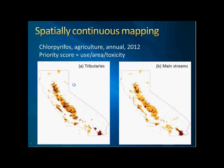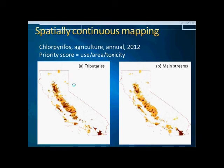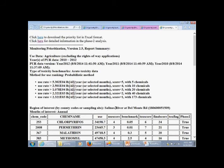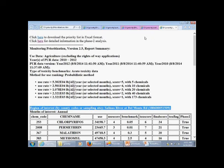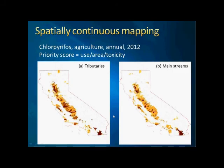Let's go ahead to the next one — the spatially continuous mapping. The idea is that for most of our prioritization, we are talking about one monitoring site, checking relative priority for multiple chemicals. But spatially continuous mapping is designed for individual pesticides over the entire state of California. Here are the results. The priority score is slightly different from phase one — here I use the cumulative use and cumulative area divided by the toxicity. Cumulative use means it includes not only the watershed enclosing the monitoring site but also the entire upstream drainage areas.